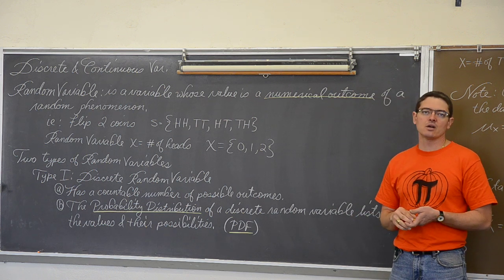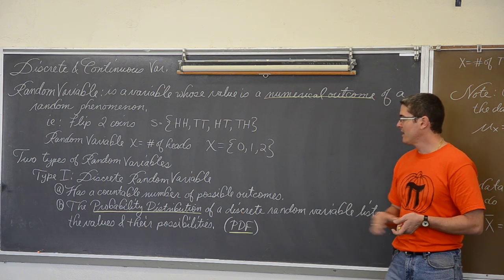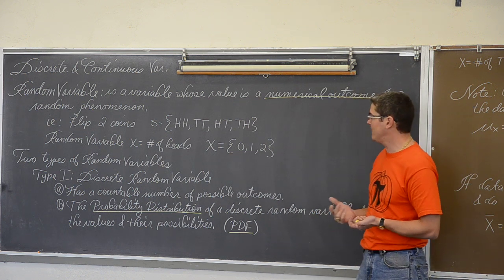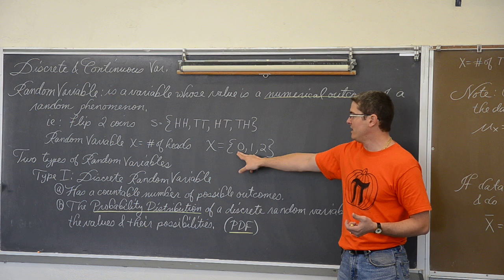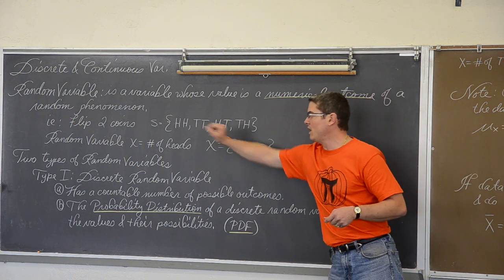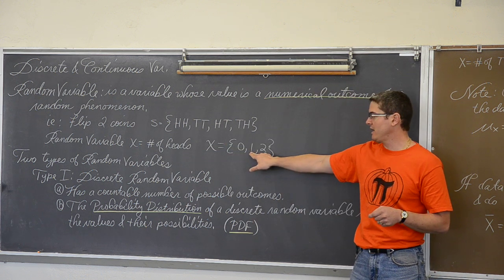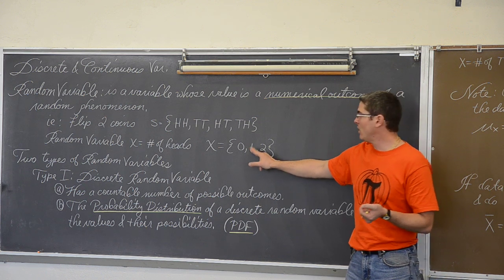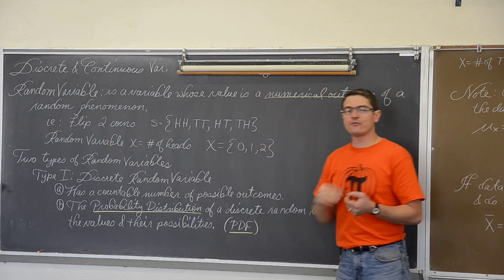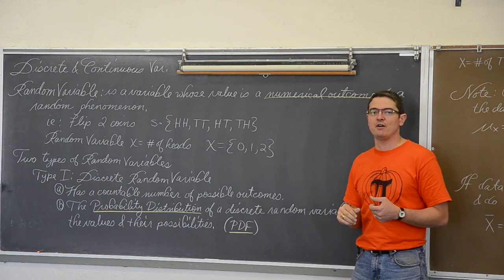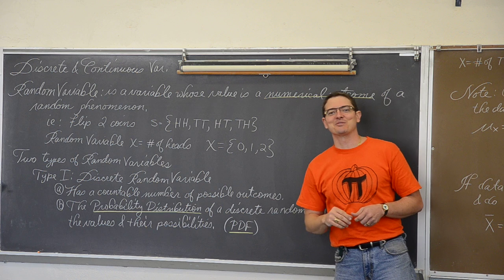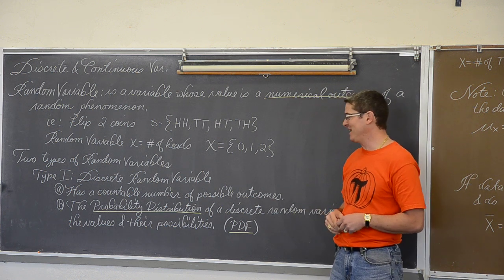You just list off the outcomes and their probabilities. With the coin flip example: the probability of getting zero heads is one-fourth, the probability of getting one head is two out of four outcomes, so one-half, and the probability of getting two heads is one-fourth.